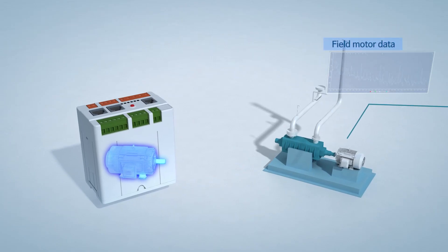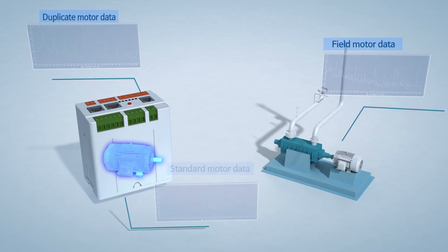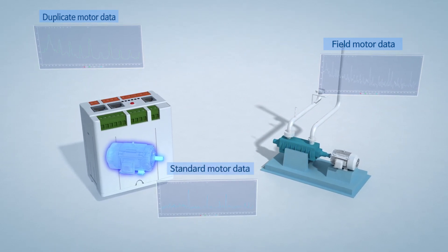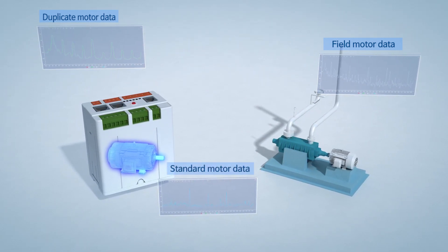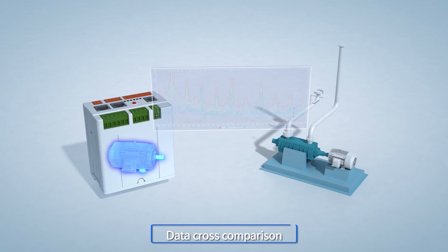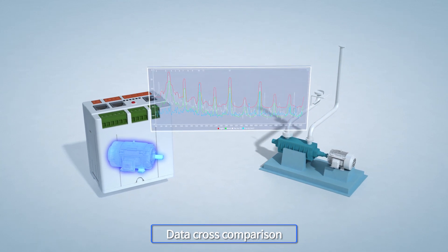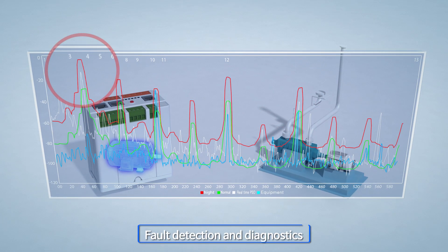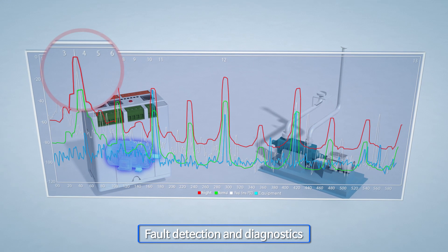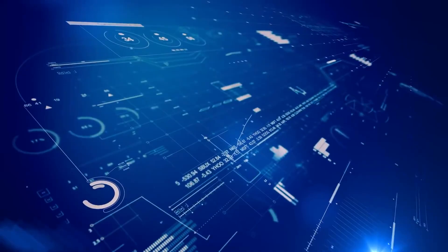The system does the comparison analysis between the measured data from the motor and the healthy baseline motor database. It does not miss even the slightest difference and analyzes it carefully to diagnose the abnormalities. Then it gives advance notice of the possibility of failure in real time.